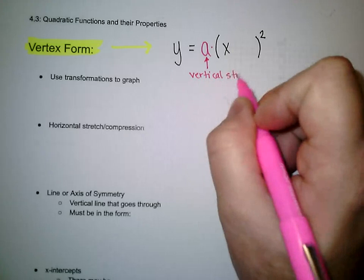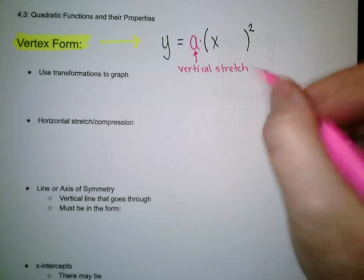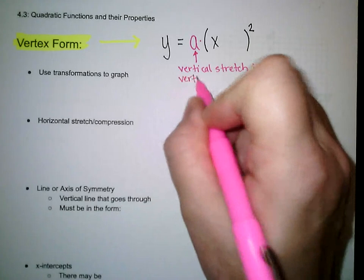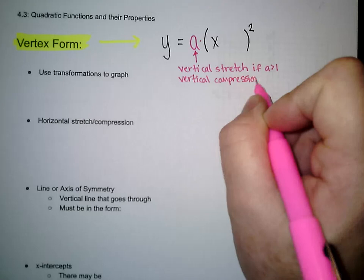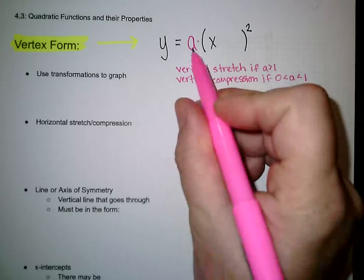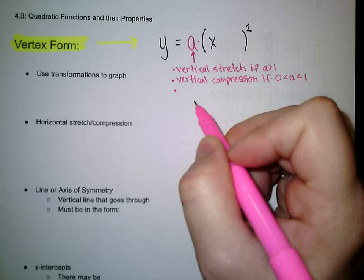What we're doing is multiplying the height of each ordered pair by that number. If your number is bigger than 1, the height of each ordered pair will get taller, which makes it stretch vertically. It could be a vertical compression if a is between 0 and 1. The stretch and compression is always a positive number, but if it is negative out front, then it's going to be a reflection across the x-axis.